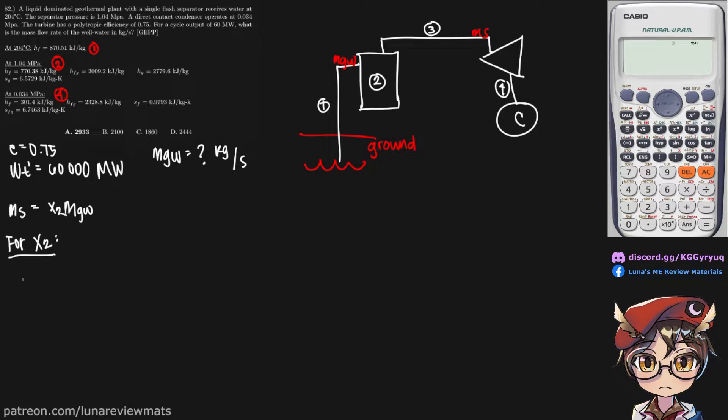So we know that H1 is equal to H_F2 plus X sub 2 H_FG2. Why? Because the enthalpy doesn't change when you merely extract it from the ground. So we can equate this. This becomes 870.51. H_F2 is 770.38.